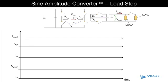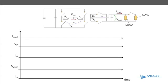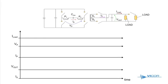The exceptional performance of the Sign Amplitude Converter is highlighted when a load step is applied. Let's assume the converter is operating and providing power to a light steady state load. The average output voltage is very close to the input voltage divided by the transformer turns ratio.